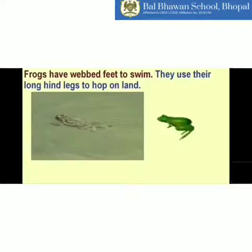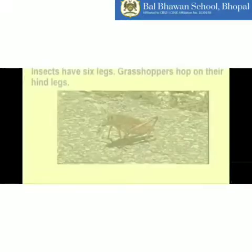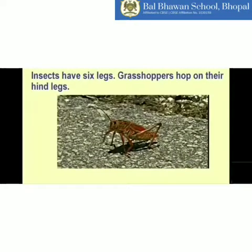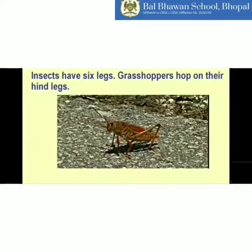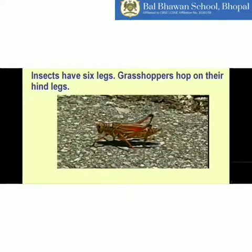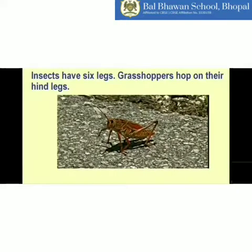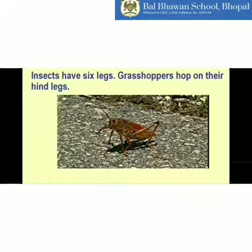The frog is a very strange animal. It has very long hind legs whereas its front limbs are short, so that it can hop. Next are invertebrates, or insects. Insects have six legs. Grasshoppers hop on their hind legs. All insects have six legs — this was taught in class four also.